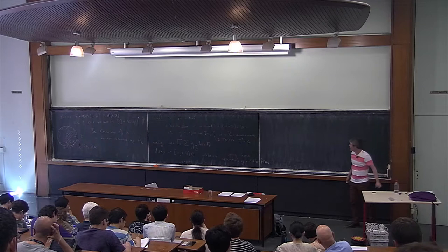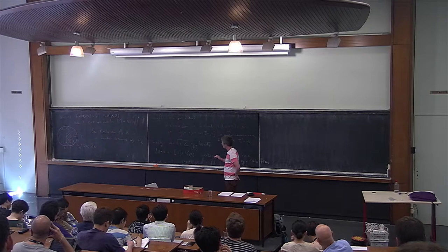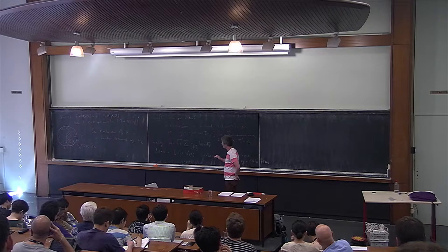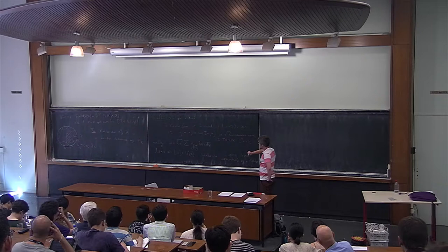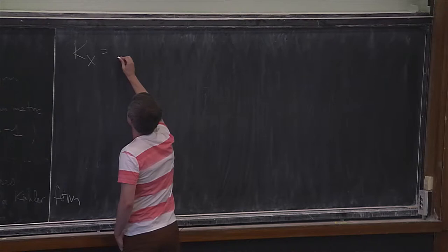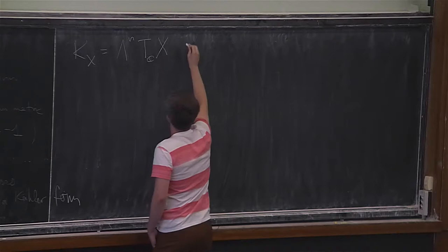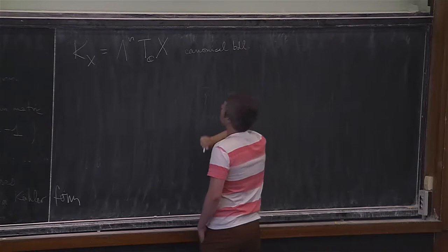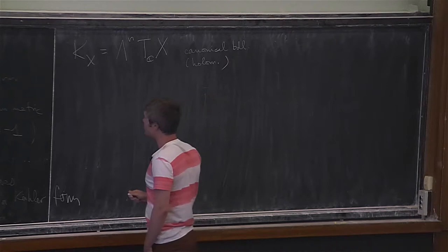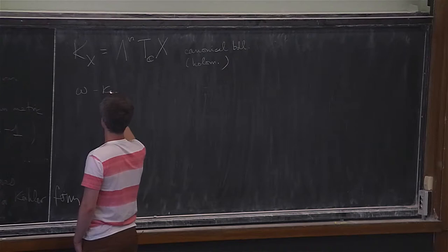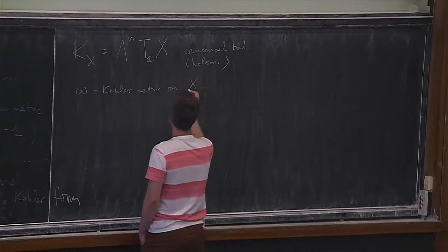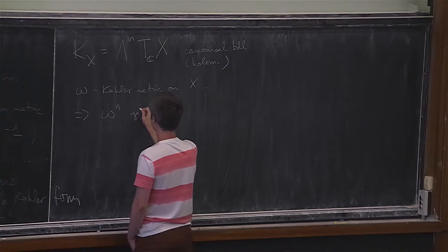There's another very special feature about K3 surfaces, which is the fact that they have some very special Kähler metrics. Suppose you have a complex n-manifold with a Kähler metric. The canonical bundle K_X is essentially the top exterior power of the complex tangent space. If omega is a Kähler metric on X, then its n-th power also gives a metric on K_X, and you can compute the curvature of this line bundle.